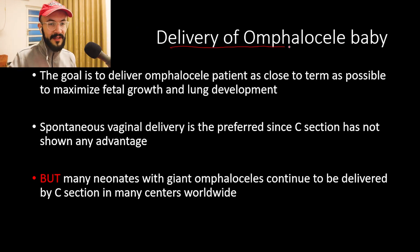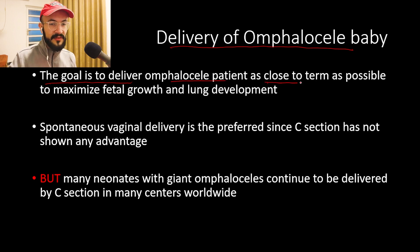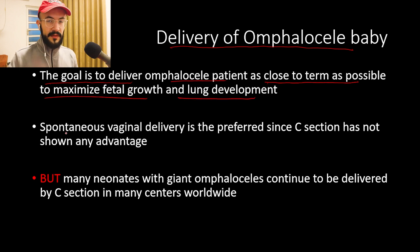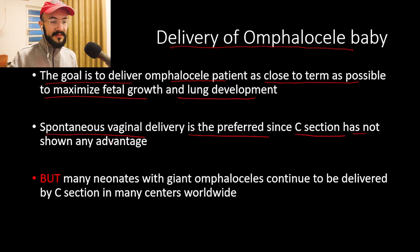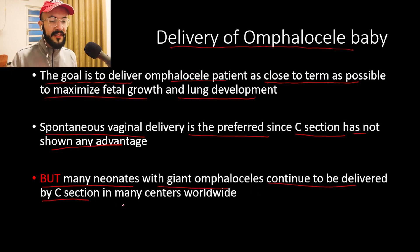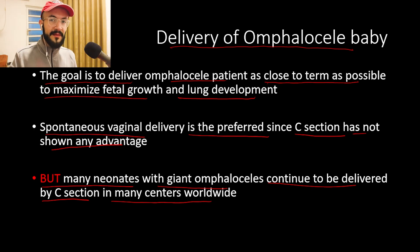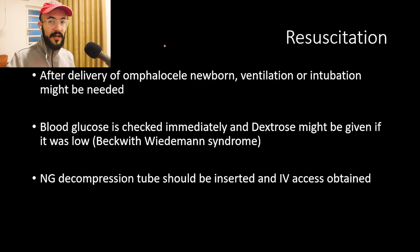After diagnosing omphalocele, the goal for delivery is to deliver the patient as close to term as possible to maximize fetal growth and lung development. Spontaneous vaginal delivery is preferred since cesarean section has not shown any advantage in many studies, but many neonates with giant omphalocele continue to be delivered by C-section in many centers worldwide. Giant omphalocele is defined as an abdominal wall defect larger than 3 cm with the herniated viscera containing the liver.